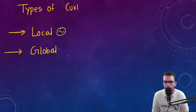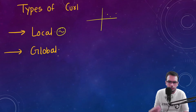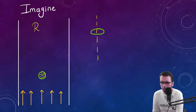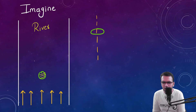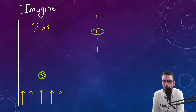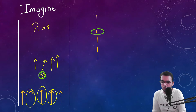We calculate the local curl at specific points — at this point, at this point, and so on. Global curl essentially means the resultant of the whole vector field. To visualize this, suppose we have a metal disc in a river flowing at constant velocity, with all vectors having the same magnitude. Would the disc rotate about its own axis? No, because everything is balanced — there is no unbalanced force — so the disc will not rotate and will continue flowing straight.